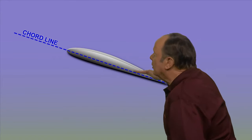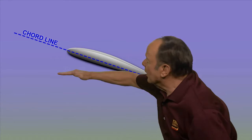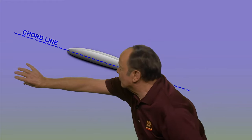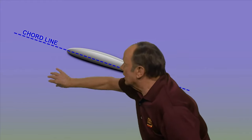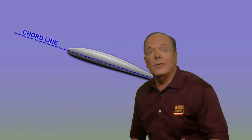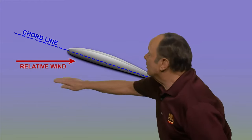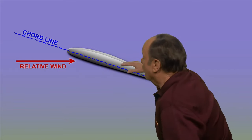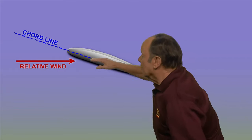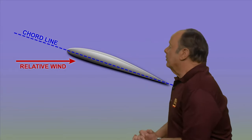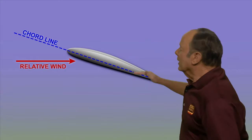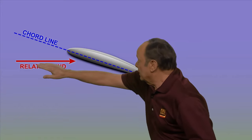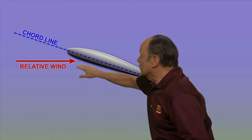Now if the wing is going this way, then the wind will be coming from the opposite direction, and they call that the relative wind because it's relative to the wing itself. So if the wing is going this way, then the relative wind will be coming from the opposite direction.